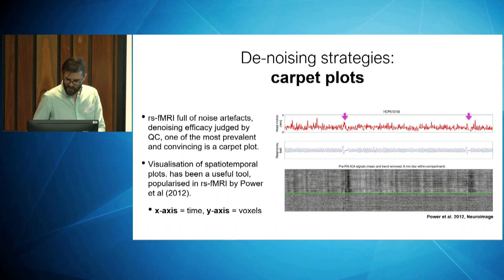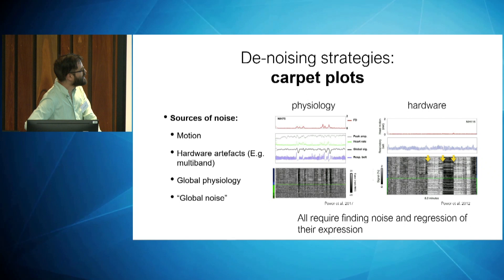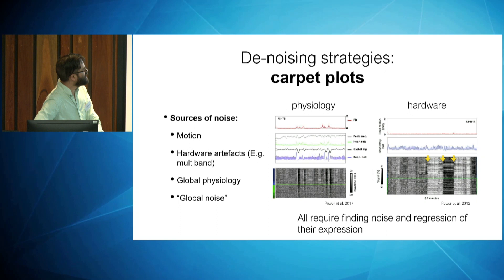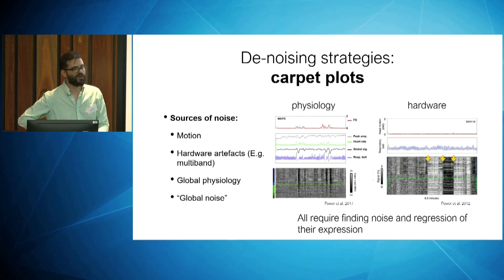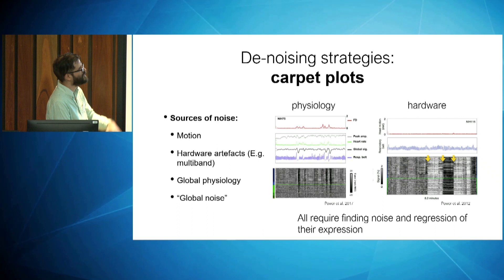By doing carpet plots and looking at them carefully, you can see many sources of non-neuronal signatures. On the left-hand plot, you see physiology traces related to these big global artifacts in your data. On the right-hand side, you also see some hardware malfunctions which can give rise to large shifts. These are all present under minimal pre-processing, and you find you need to do some further pre-processing — denoising — to really handle these effects.